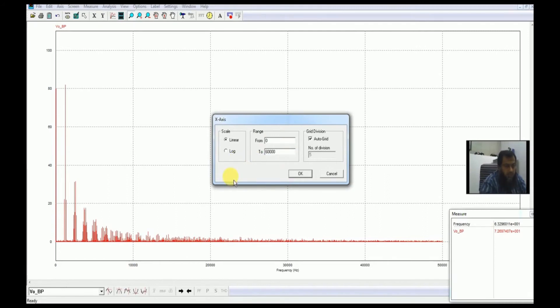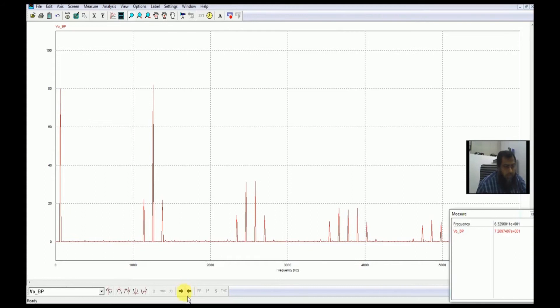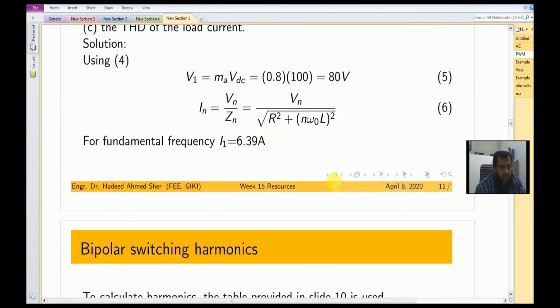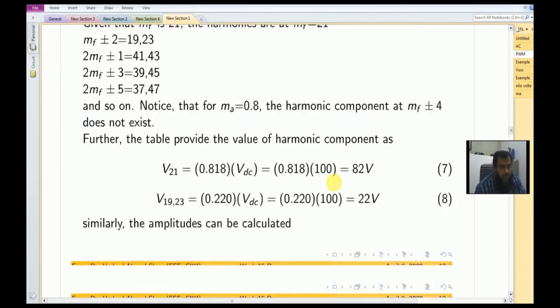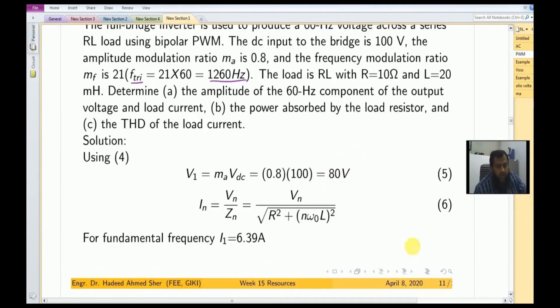Now you can see, let me set this to something around 6000 Hertz. You can see here that the fundamental value of the output voltage at 60 Hertz is 79.8 volts. In the last example we calculated it to be equal to 80 volts, so that is actually what we are expecting.